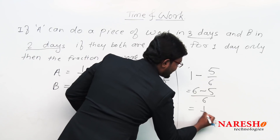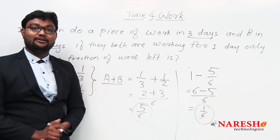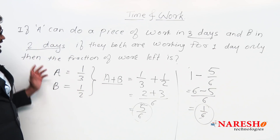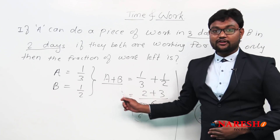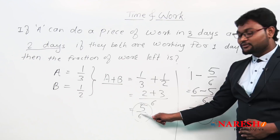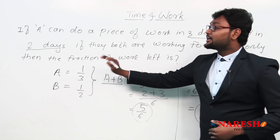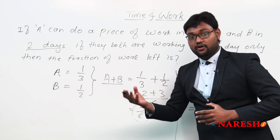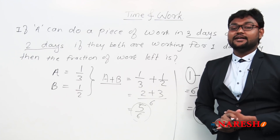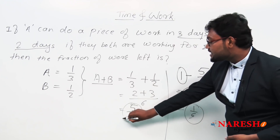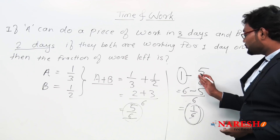The question asks: if they work together for only one day, what fraction of work is left? Since work is always considered as one single unit, remaining work equals total work minus work completed in one day: one minus five by six equals six minus five over six, which is one by six. So one by six is the fraction of work left.